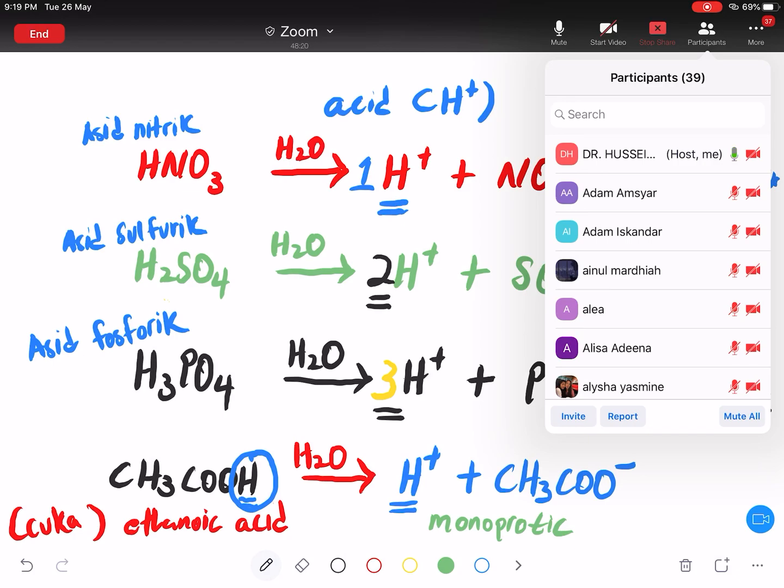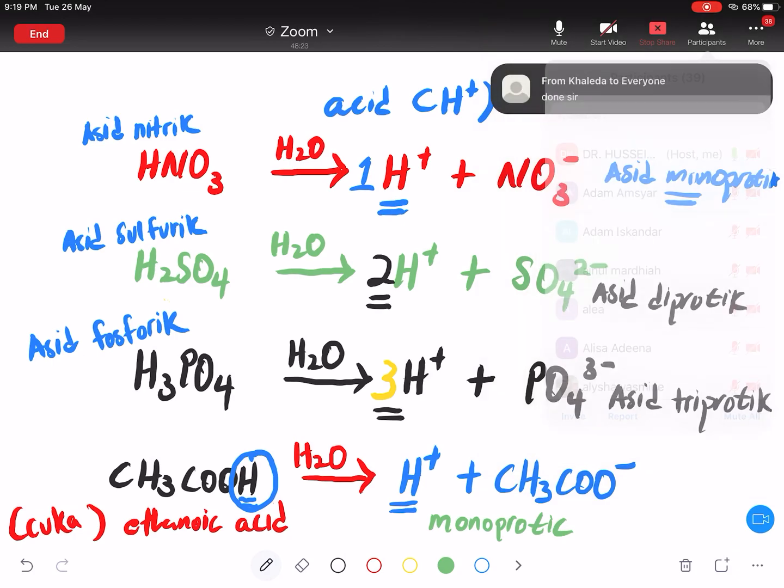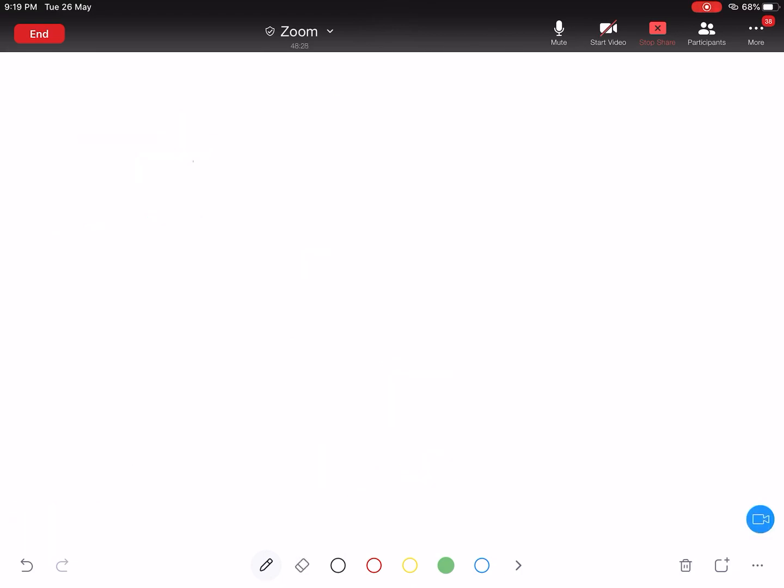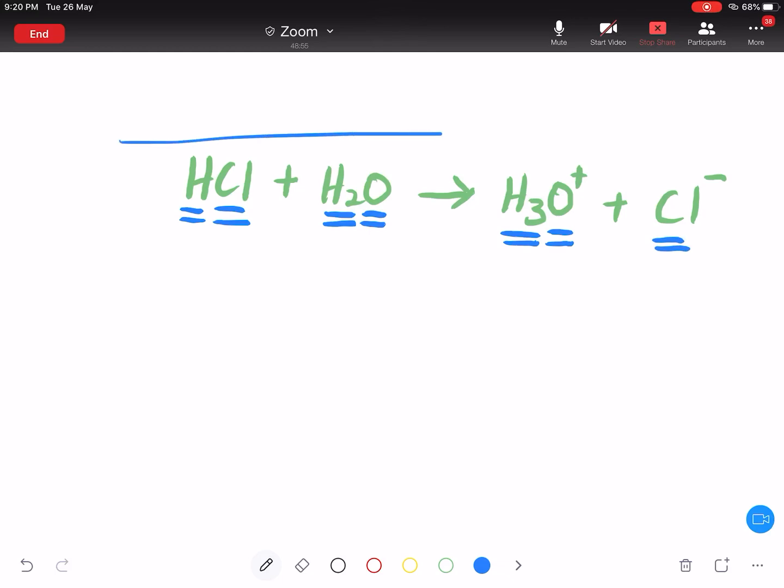Okay. Tak apa. Kita belajar, okay? Okay, good. Macam ni. Guys, listen. Kalau you ada HCl, you plus H2O. Then you dapat H3O plus plus Cl minus. Jeremiah, look at here. It's already balanced. Saya ada 3 hydrogen, 3 hydrogen. 1 oxygen, 1 oxygen. 1 chlorine, 1 chlorine. Kan dah balance?